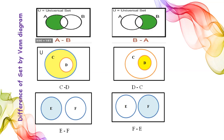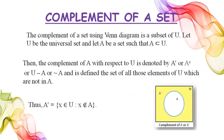Now we move on to our next topic — the complement of a set, which is a very important operation. The complement of a set, using Venn diagrams, is a subset of the universal set U. Let U be the universal set and A be a set such that A is a subset of U. The universal set is the superset of the set we are interested in.